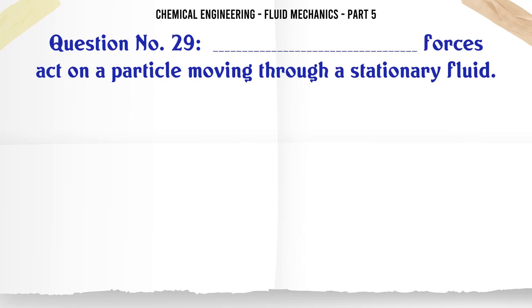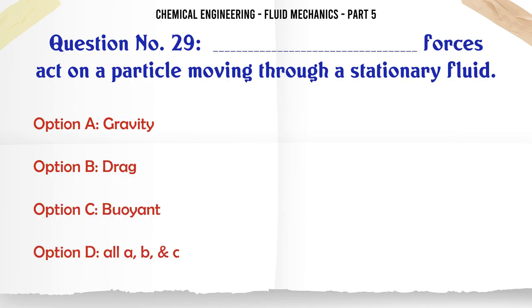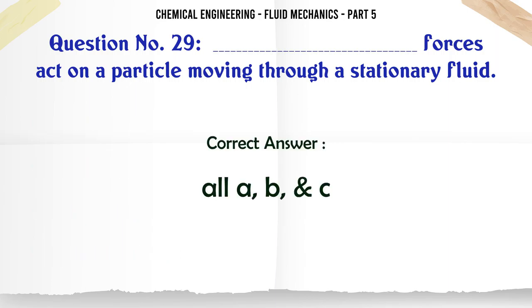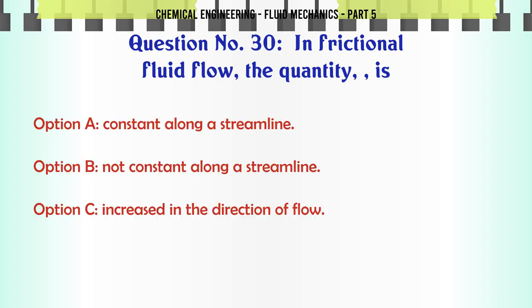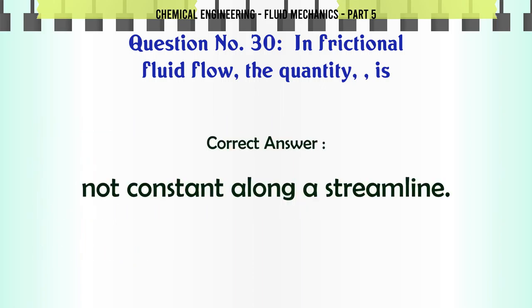Forces act on a particle moving through a stationary fluid: a) gravity, b) drag, c) buoyant, d) all a, b, c. The correct answer is all a, b, c. In frictional fluid flow, the quantity is: a) constant along a streamline, b) not constant along a streamline, c) increased in the direction of flow, d) none of these. The correct answer is not constant along a streamline.